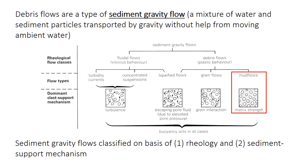Debris flows are a type of sediment gravity flow, also sometimes called mud flows or cohesive debris flows. A sediment gravity flow is a mixture of water and sediment that moves because of gravity, not because the water itself is flowing. There are four major types of sediment gravity flows; we'll cover the other three later when we discuss other sedimentary environments. These four types are differentiated based on rheology — the behavior of the flow — as well as their sediment support mechanism.